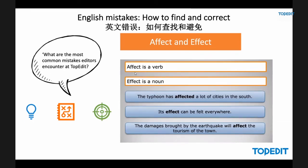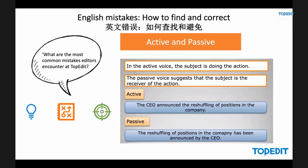Let's move on to affect and effect. Affect is a verb; effect is a noun. 'The typhoon has affected a lot of cities in the south. Its effect can be felt everywhere.' 'The damages brought by the earthquake will affect the tourism of the town.' This is one of the reasons why it's so important to read your work out loud — it will help you catch these distinct differences in word use.